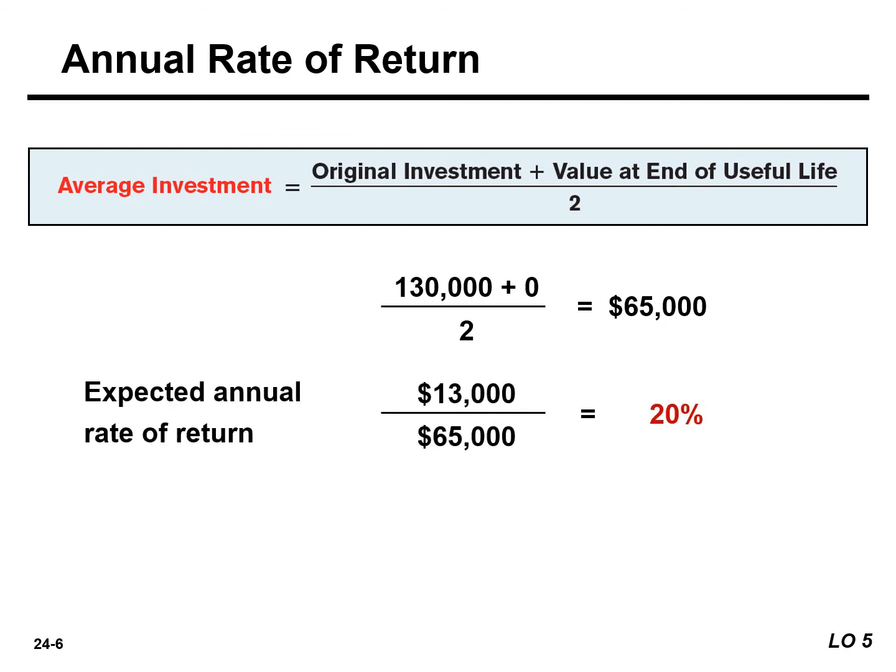The expected annual rate of return for Reno's investment in new equipment is 20%. It is calculated by taking $13,000 and dividing it by $65,000.